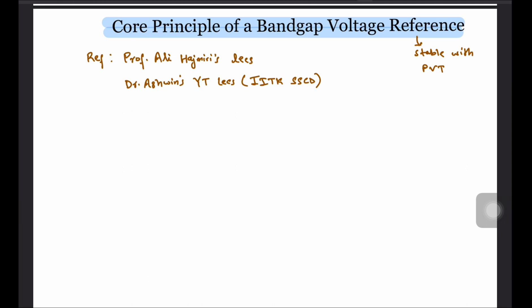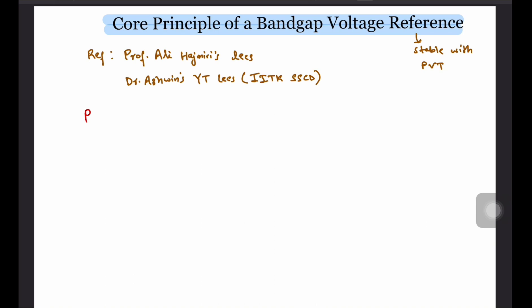When you hear the terms bandgap references, you would most likely also hear PTAT and CTAT along with it. PTAT stands for proportional to absolute temperature whereas CTAT stands for complementary to absolute temperature. The key idea behind the bandgap reference is that we generate a PTAT voltage which increases linearly with temperature. Next we generate a CTAT voltage which varies inversely with temperature. Then we try to combine them in such a way that the temperature dependence cancels out.